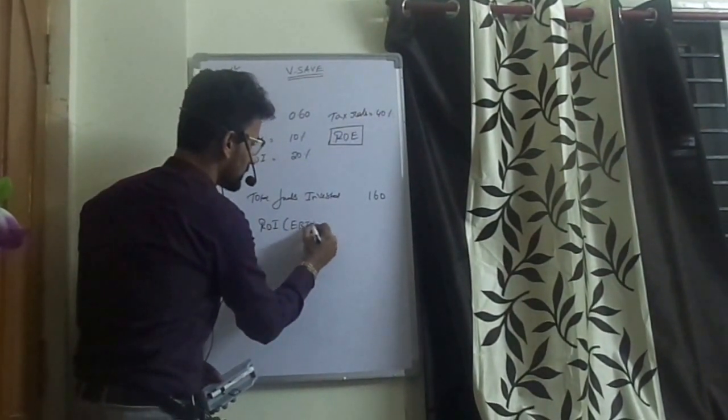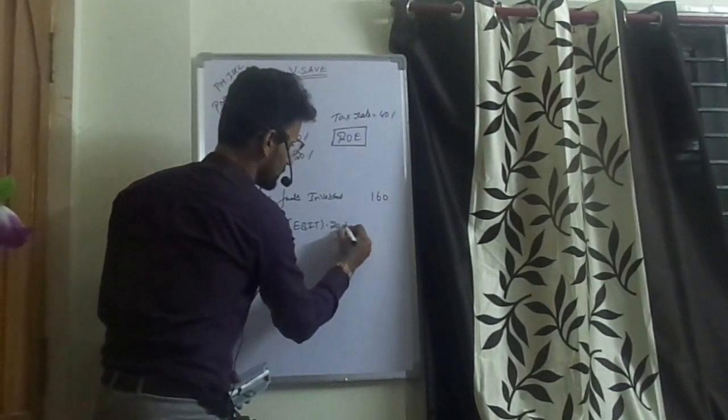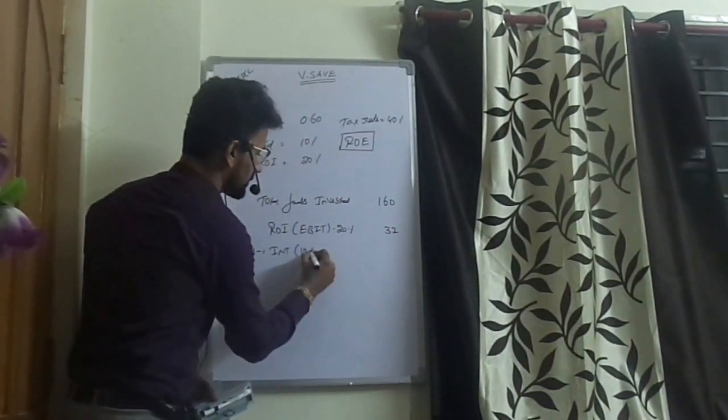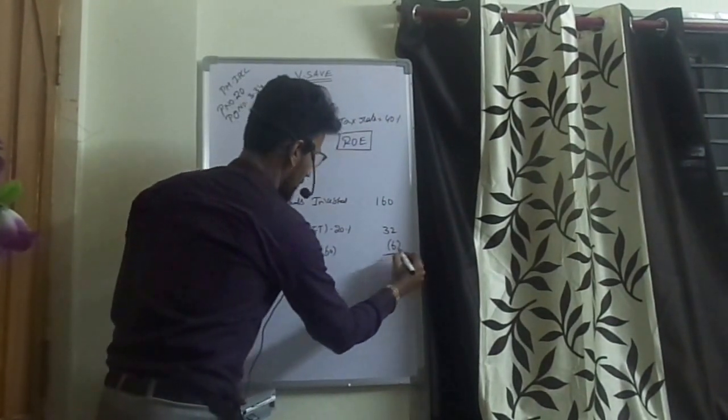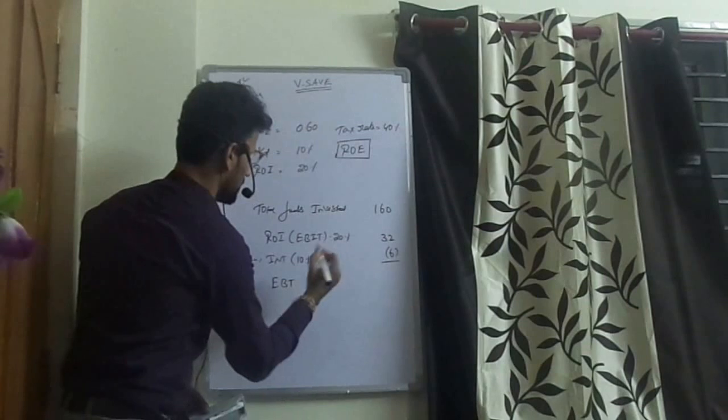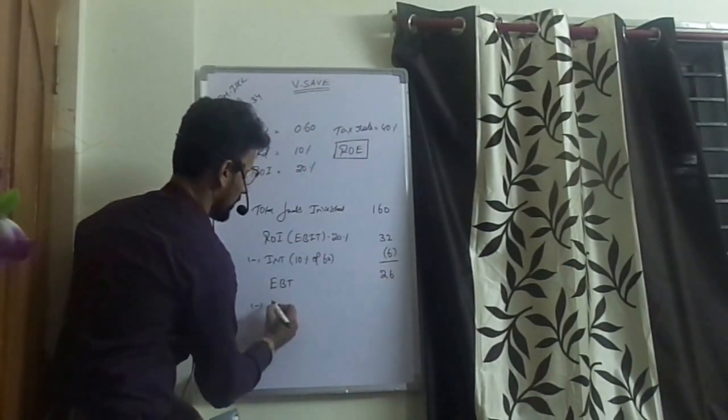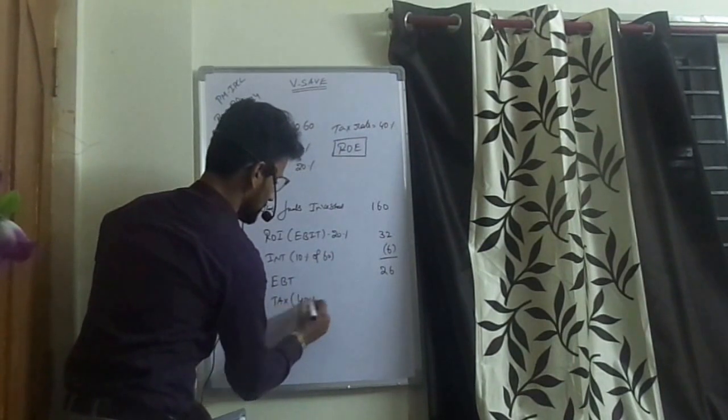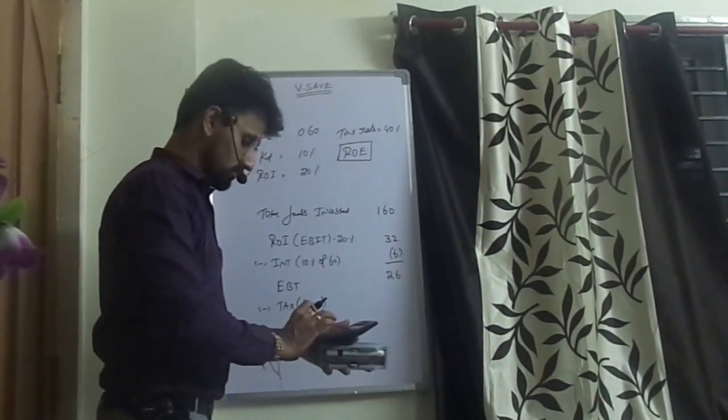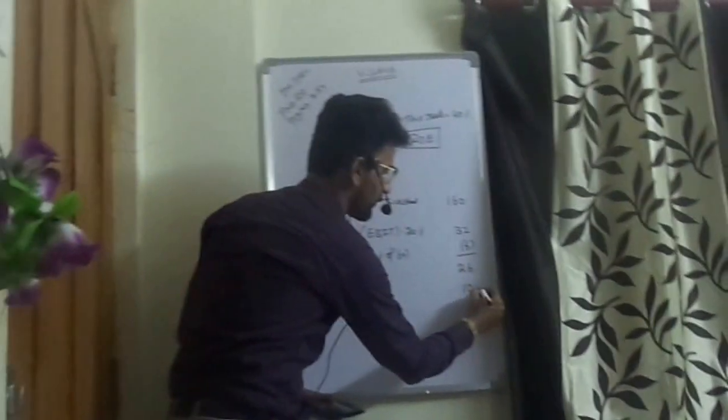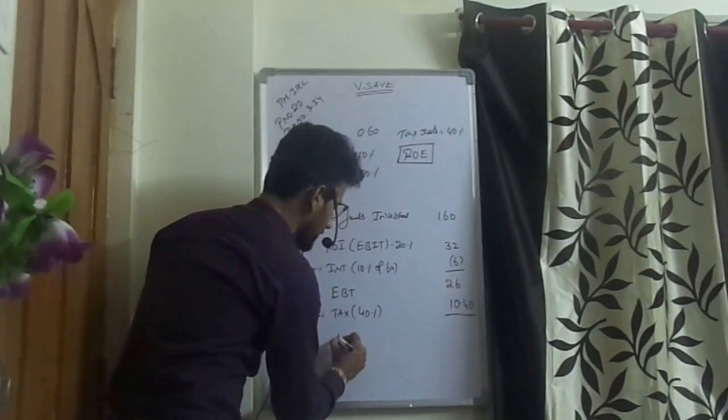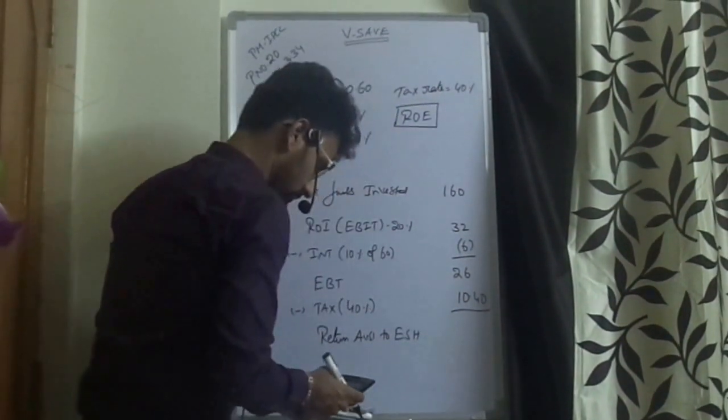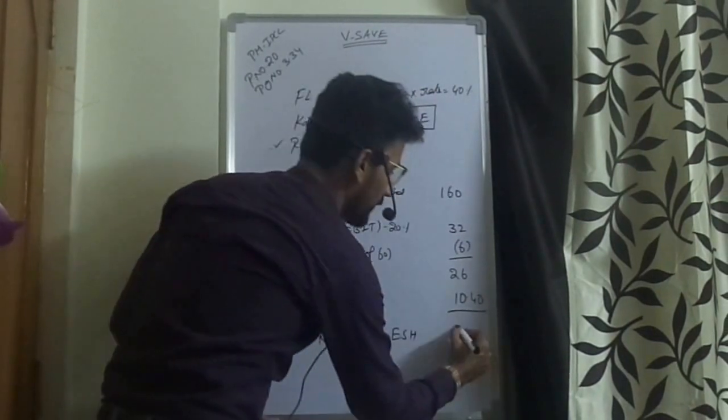Interest, which is 10% of 60, is 6. Your EBT is 26 and your tax, which is 40%, comes to around 10.40. Then, return available to equity shareholders is 15.6.